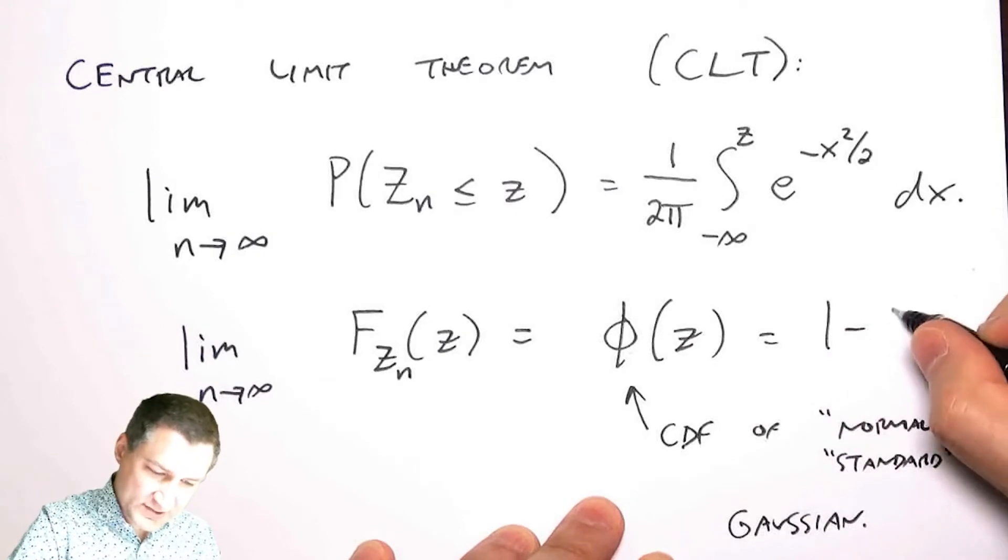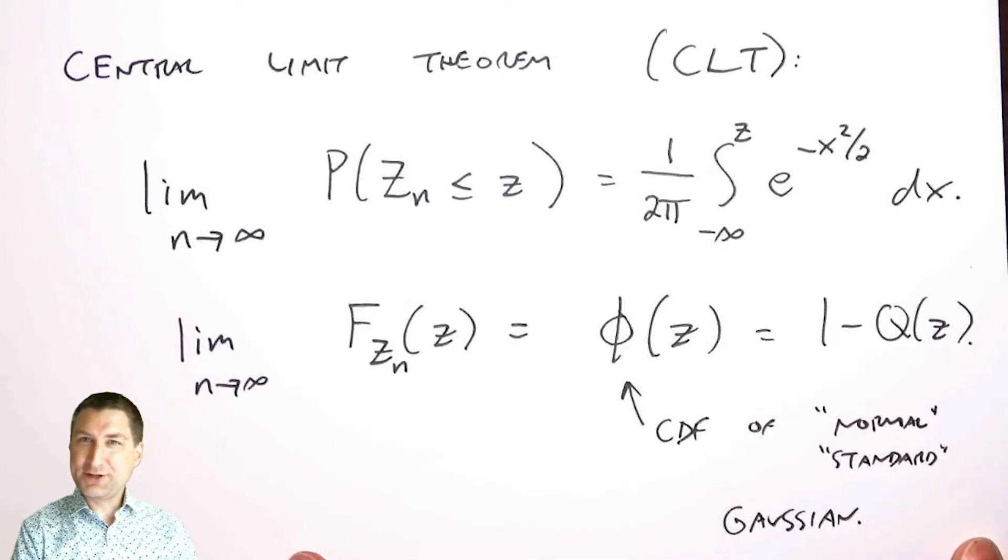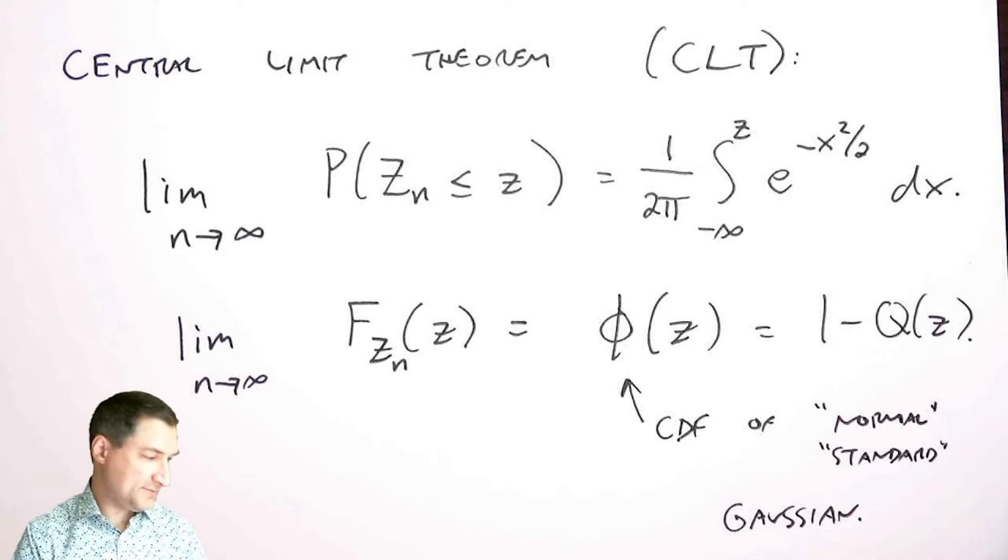This would be like one minus the Q function at whatever this number is. That's really interesting. That's like saying that the CDF of this normalized sum of random variables, no matter what the distribution of random variable is, eventually converges to a Gaussian.